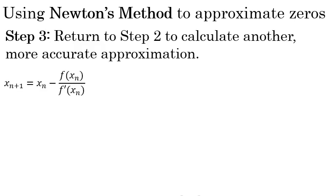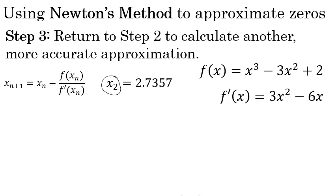Step three in Newton's method is to basically repeat step two using your improved better estimate of 2.7357. We're calling this x sub 2 because it was our second approximation, the one that was improved upon when we used Newton's method the first time. Recall our original function in the derivative that we previously found.